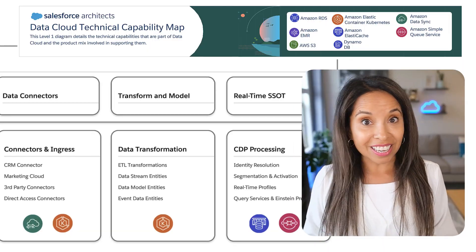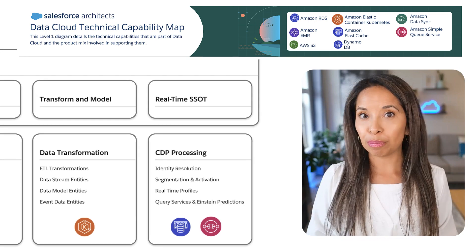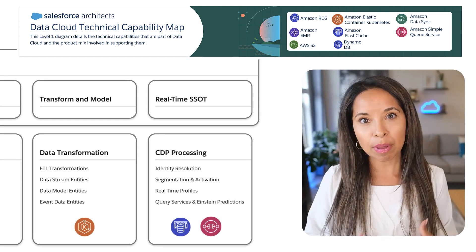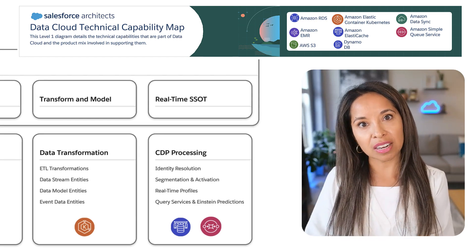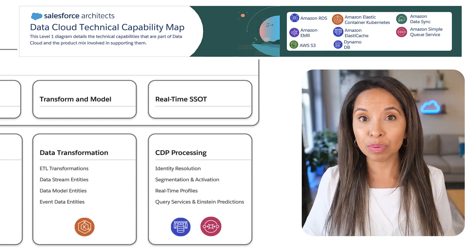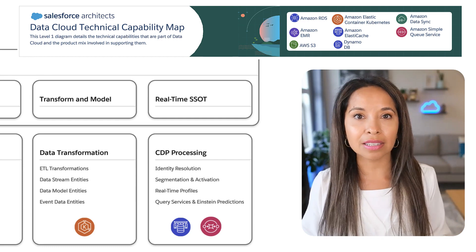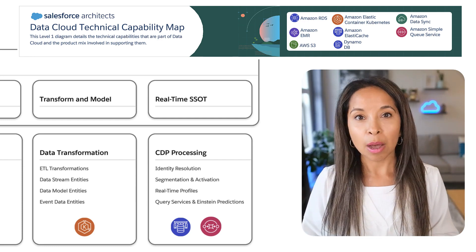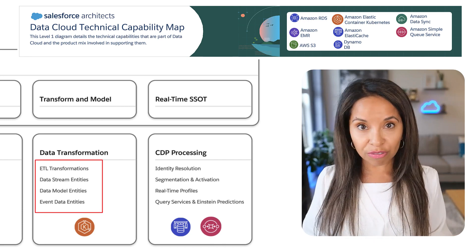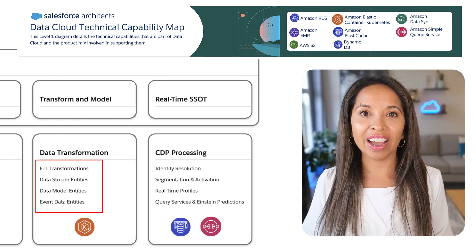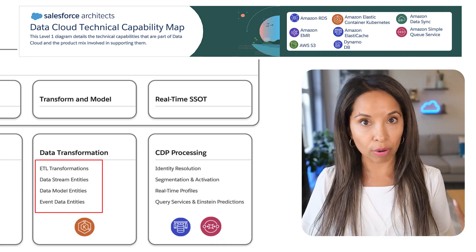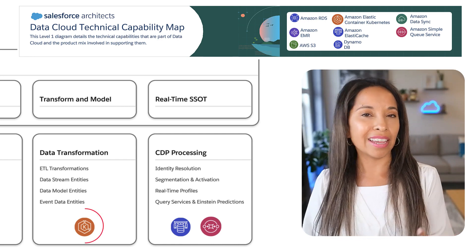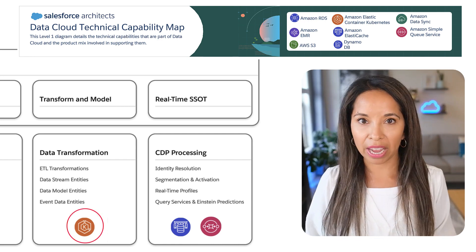Once we bring in all this data, we need to focus on transformation. This data is being connected from lots of different sources, but it needs to be mapped to the shape of our S Objects. And because we have lots of different sources, this data is coming in all different shapes and sizes. Luckily, you can configure all of this in the UI of data cloud, which is surfaced in core, and this is again supported by Kubernetes.